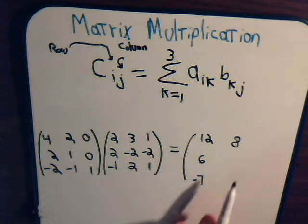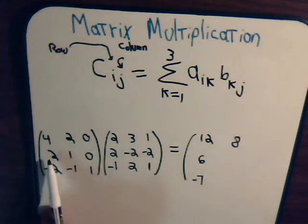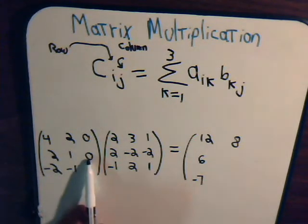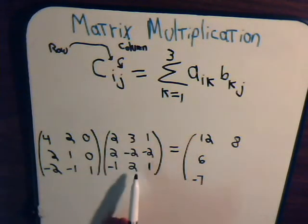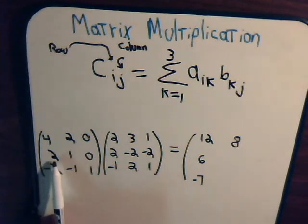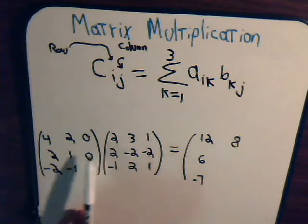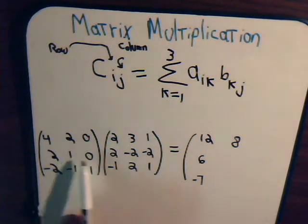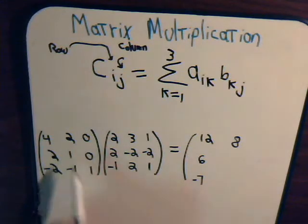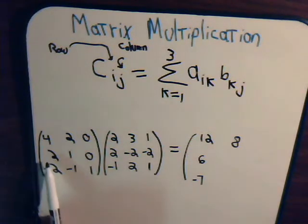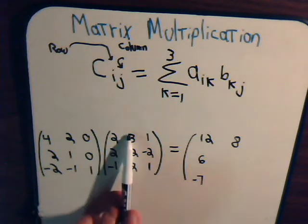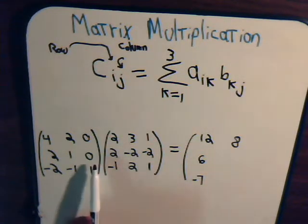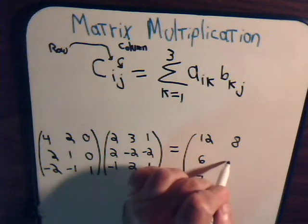Now to get the next entry beneath that, we go across the second row with the second column. Here we have three times two is six, minus two, that's four, and then that's zero, so that gives us four.